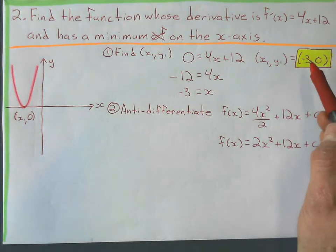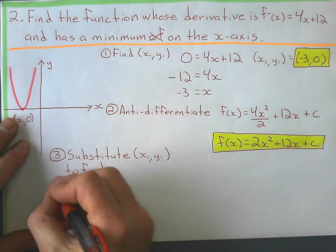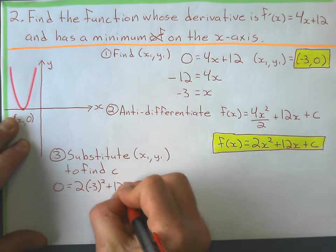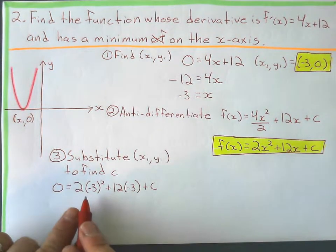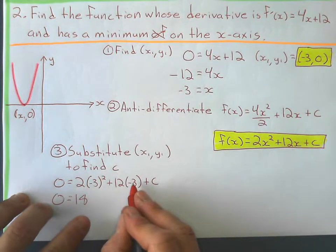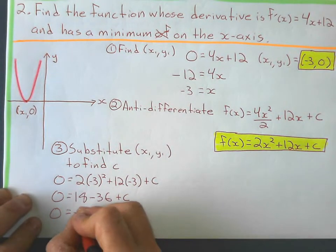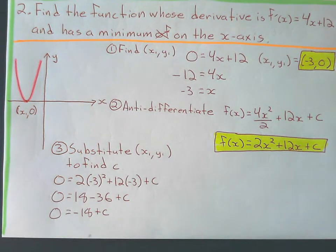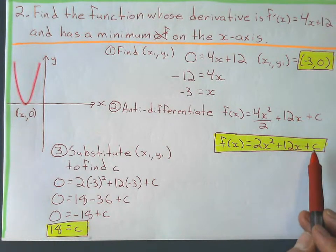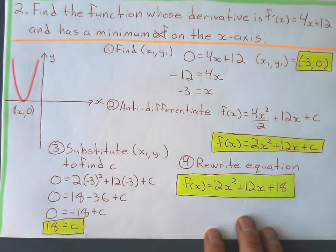Now substitute the point (negative 3, 0) into the equation to solve for c. Remember, 0 represents f(x). So: 0 equals 2 times (negative 3) squared, plus 12 times negative 3, plus c. Negative 3 squared is 9; 9 times 2 is 18. 12 times negative 3 is minus 36. So 0 equals 18 minus 36 plus c, which gives negative 18 plus c equals 0, so c equals 18. Now I rewrite the equation substituting 18 for c. Those are just some examples — this should get us started.